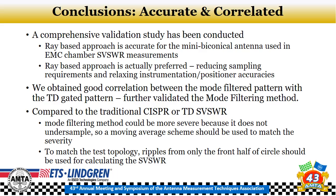The main takeaway of this validation study is that the method is very accurate. We performed a comprehensive validation showing that the ray-based approach is accurate for the small electrical antennas used in EMC site VSWR measurements. The ray-based approach is preferred because it reduces sampling requirements and relaxes instrumentation and positional accuracy needs. We obtained very good correlation between the mode filter pattern and the time domain gated pattern, and also good correlation with the traditional site VSWR methods using the CISPR and TD-NC approaches. The mode filtering method can be more severe because it doesn't undersample, so a moving average scheme and considering only the front half of the circle should be used to match the severity of the traditional SVSWR approach.